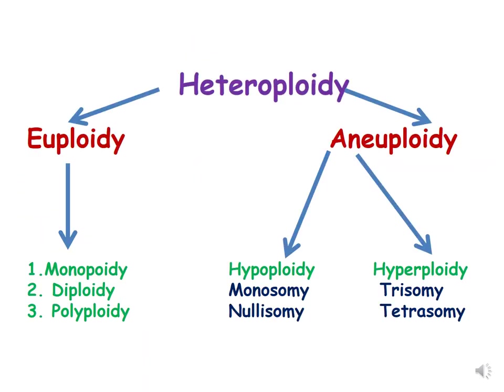Euploidy is a sub-part of heteroploidy, and heteroploidy deals with variation in chromosome number as we have already discussed. Euploidy is when the numerical change in chromosome number represents an exact multiple of the haploid chromosome number, and in this we will discuss monoploidy, diploidy, and polyploidy.